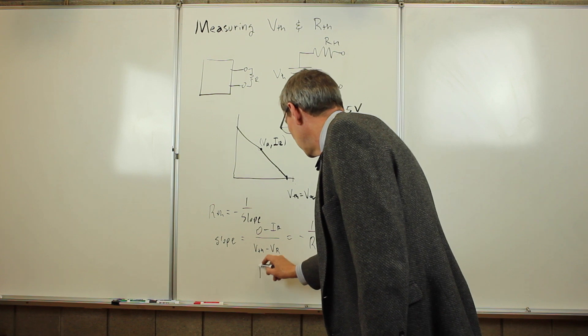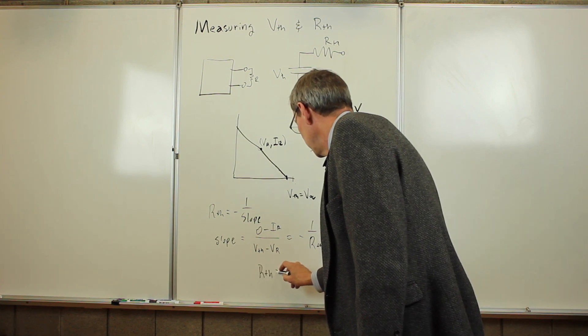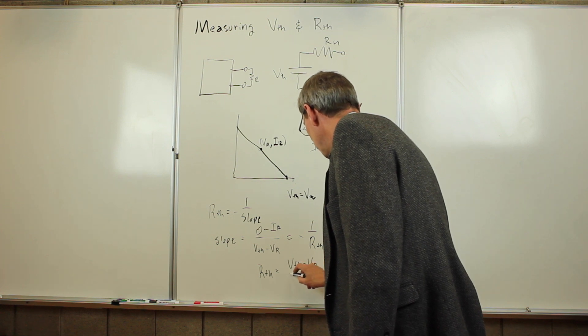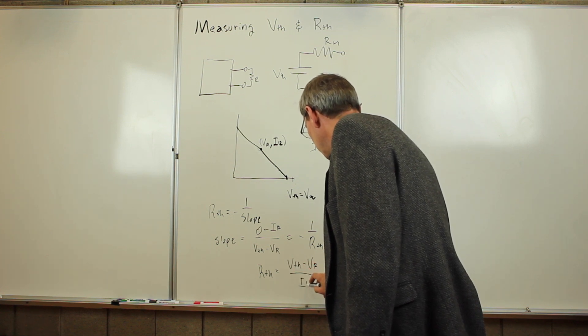Flip that and we're going to get R Thevenin is V Thevenin minus the measured voltage for that resistor divided by the current with that resistor.